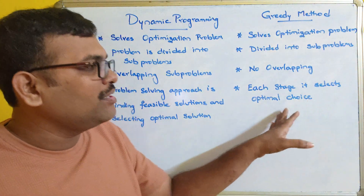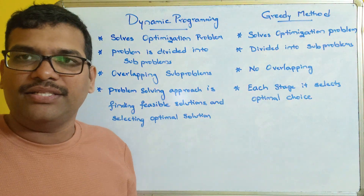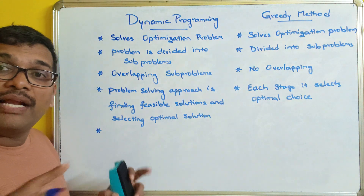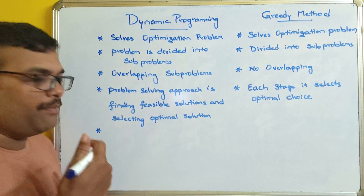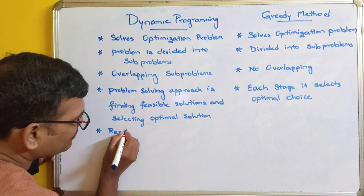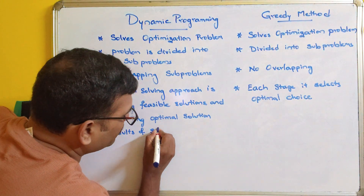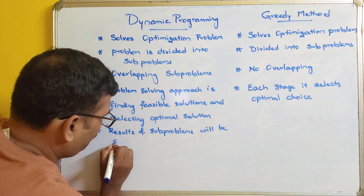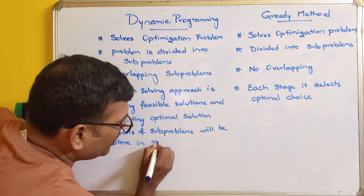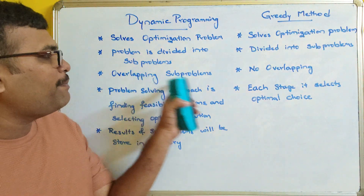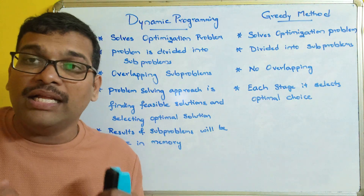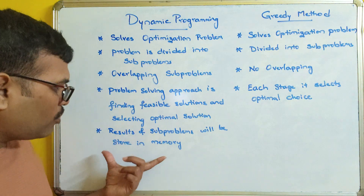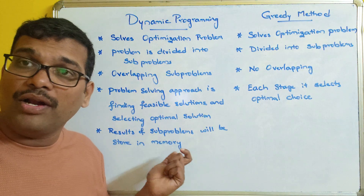In dynamic programming, memoization is used — the results of subproblems are stored in memory. Because we have overlapping subproblems, if you want to solve one problem it may require the result of another subproblem. To avoid recomputation, all results of subproblems are stored in memory. This is called memoization.